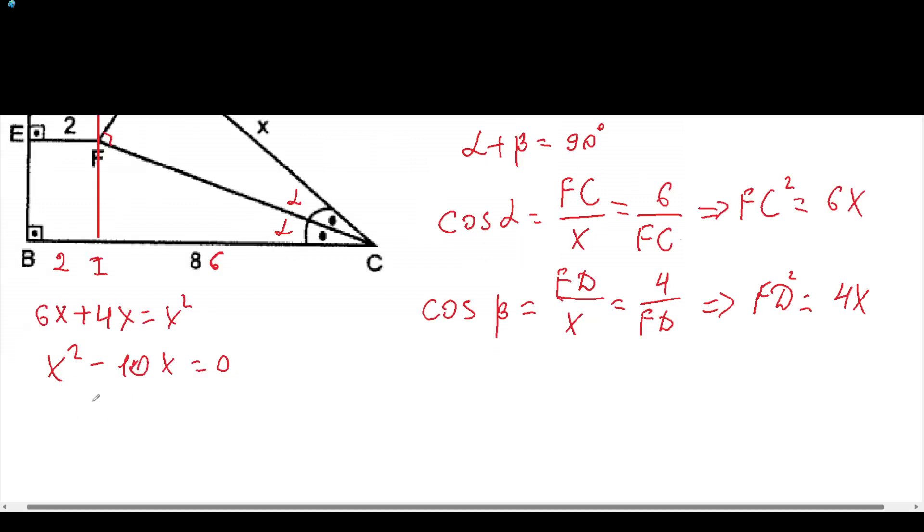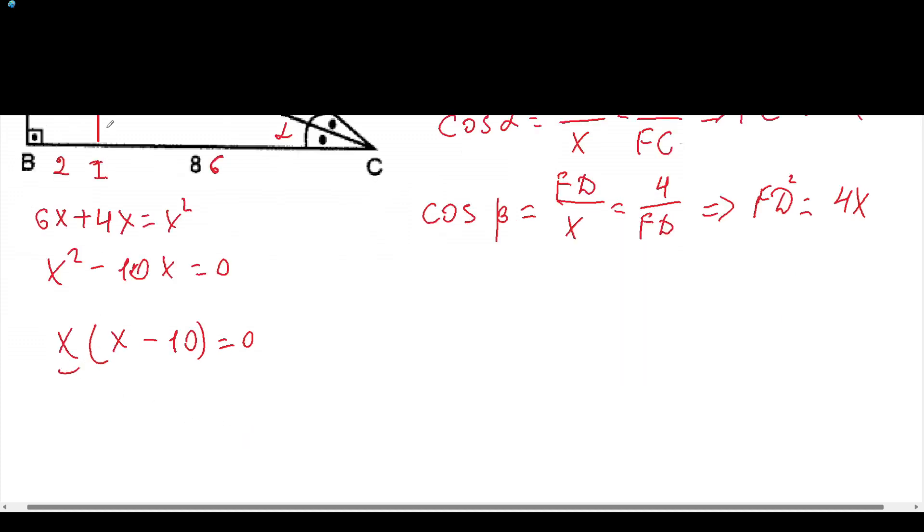And now we can take out from the bracket x, it will be x times x minus 10 will be equal to 0. And we can equal each of them to 0 and we can get that x will be equal to 0 or x has to be equal to 10. We know that x cannot be equal to 0 and the answer will be 10.